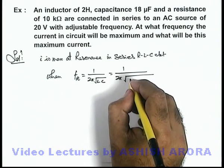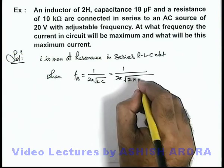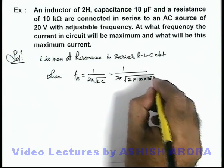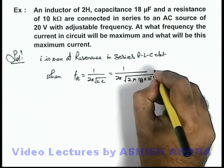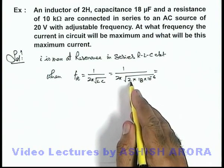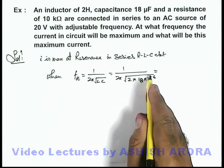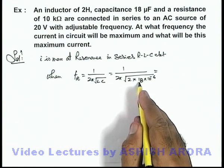root of the value of L here is 2 henry and capacitance here is 18 × 10⁻⁶ farad. So on simplifying, you can see the value will be 36, so square root of 36 will be 6,